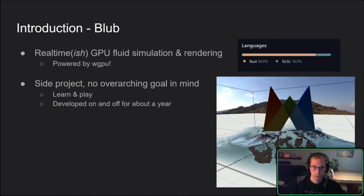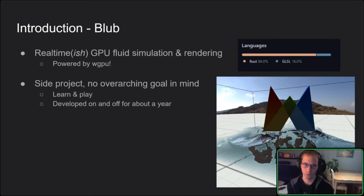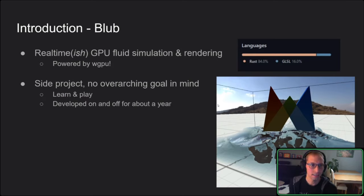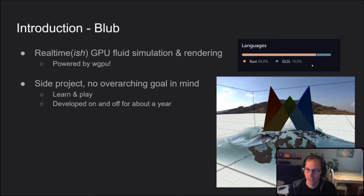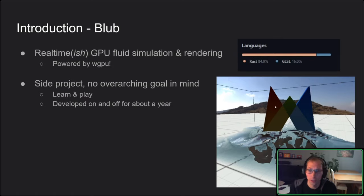So what is Bloop? It is a somewhat real-time GPU fluid simulation — it was fully real-time at some point, but then I focused on correctness and it got slower. It's still quite interactive. It's powered by WebGPU, written in Rust and GLSL. The whole thing is a side project — I wanted to get into WebGPU and learn more about fluid sims. I've worked on this on and off for a year.